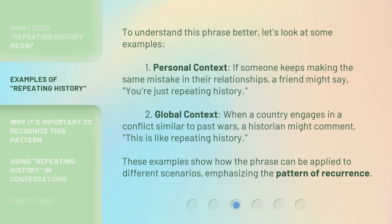To understand this phrase better, let's look at some examples. First, if someone keeps making the same mistake in their relationships, a friend might say, "you're just repeating history." Second, in a global context, when a country engages in a conflict similar to past wars, a historian might comment, "this is like repeating history." These examples show how the phrase can be applied to different scenarios, emphasizing the pattern of recurrence.